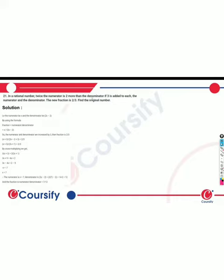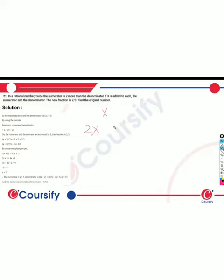In a rational number, twice the numerator is 2 more than the denominator. If 3 is added to each — the numerator and denominator — the fraction equals the original number. So, what we are saying is: when we take the numerator, twice the numerator means 2 more than the denominator. So twice the numerator is 2x.